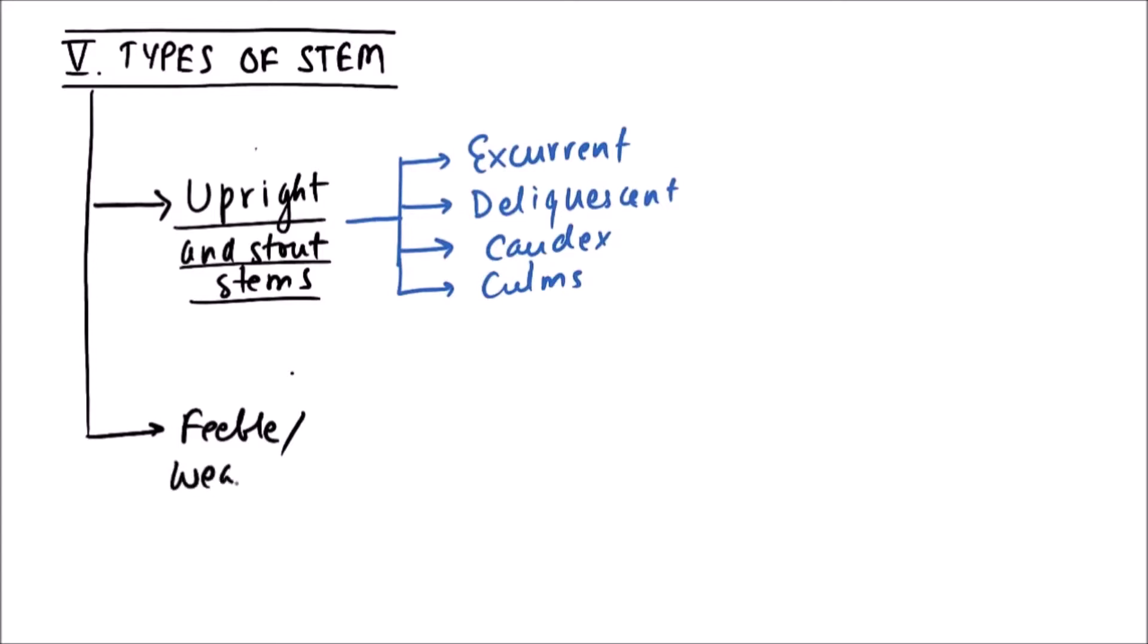Feeble or weak stem are classified into two major categories. First one is prostrate or subaerial weak stem, and the second one is upright weak stem.